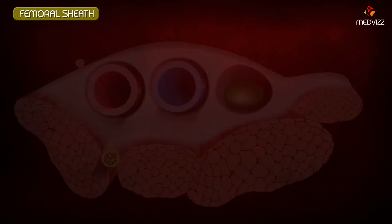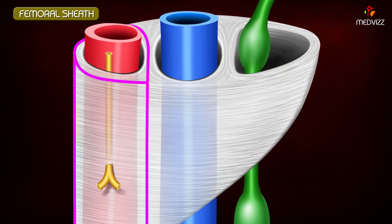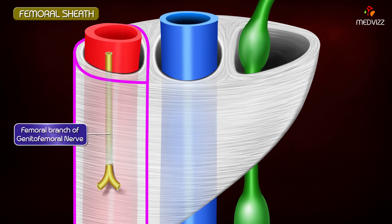The sheath is divided into three compartments by means of septa. The first is called the lateral compartment, also known as the arterial compartment, which contains the femoral artery as well as the femoral branch of the genitofemoral nerve.